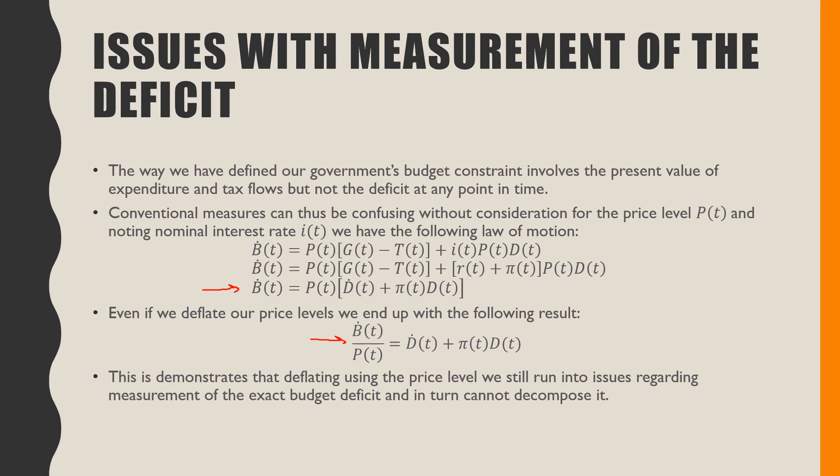This ends the video on something of a question mark. On one hand we have a tool for defining the government budget constraint, but in terms of practical measurement involving interest rates and price levels, we can't simply work with a deflated term because we have the nominal interest rate. This is the first video on budget deficits and fiscal policy. In the next video we are going to be talking about Ricardian equivalence — see you then.